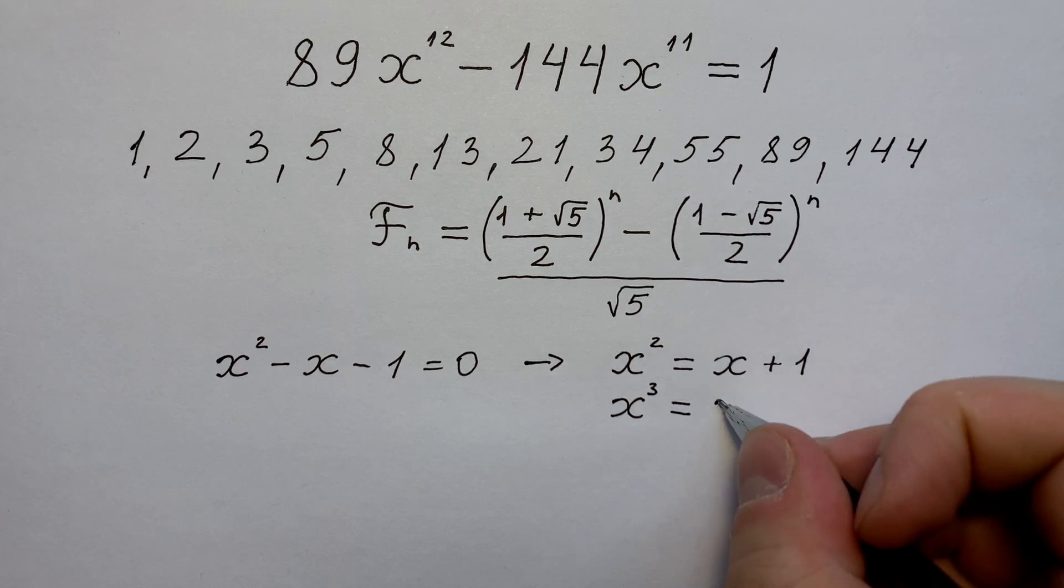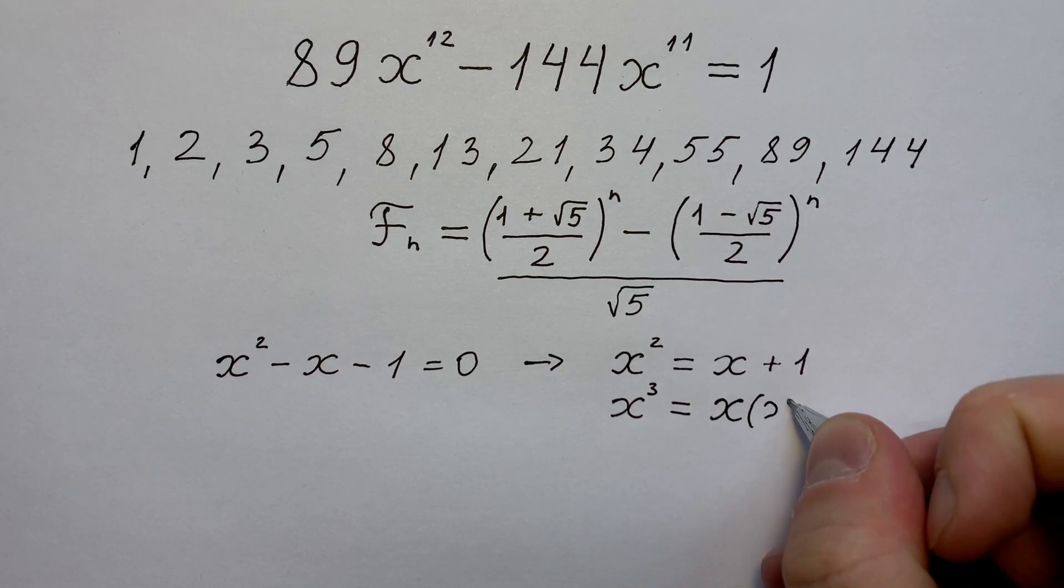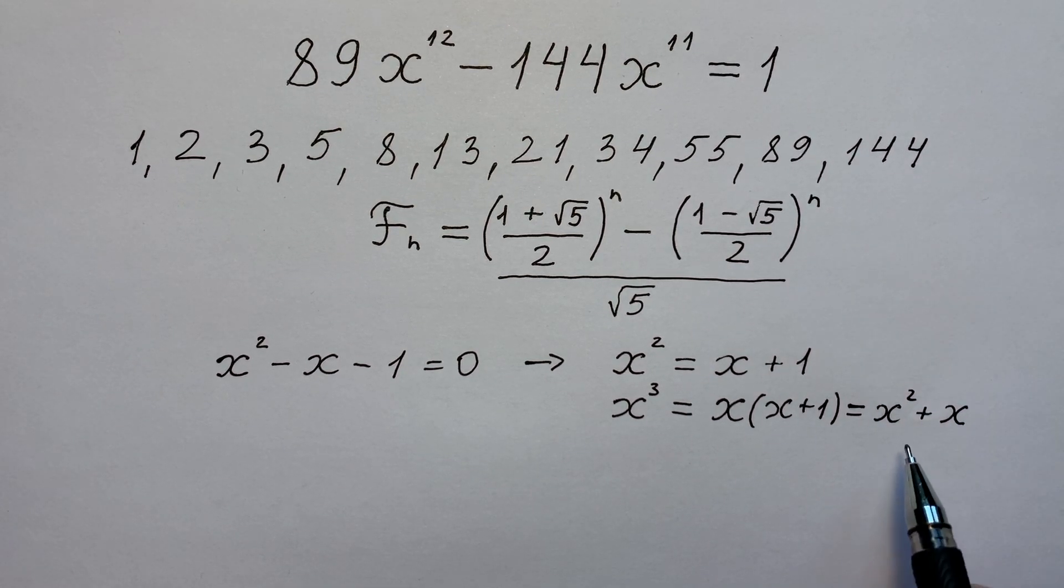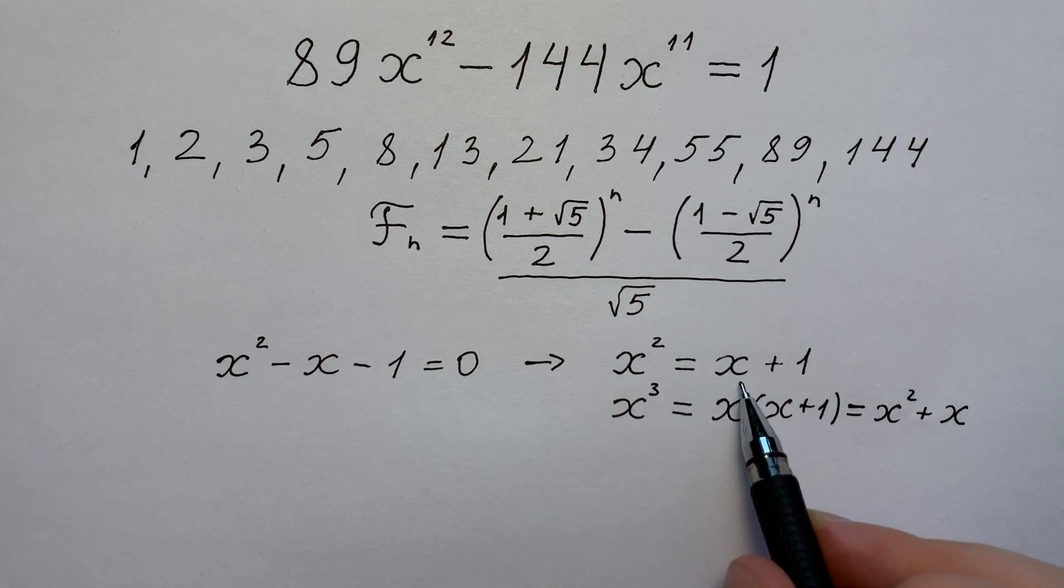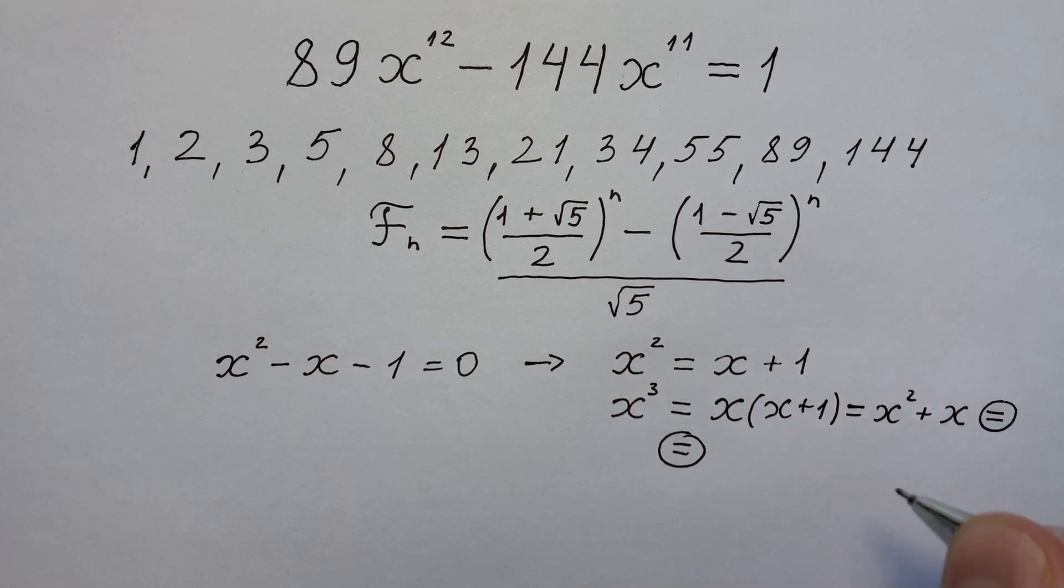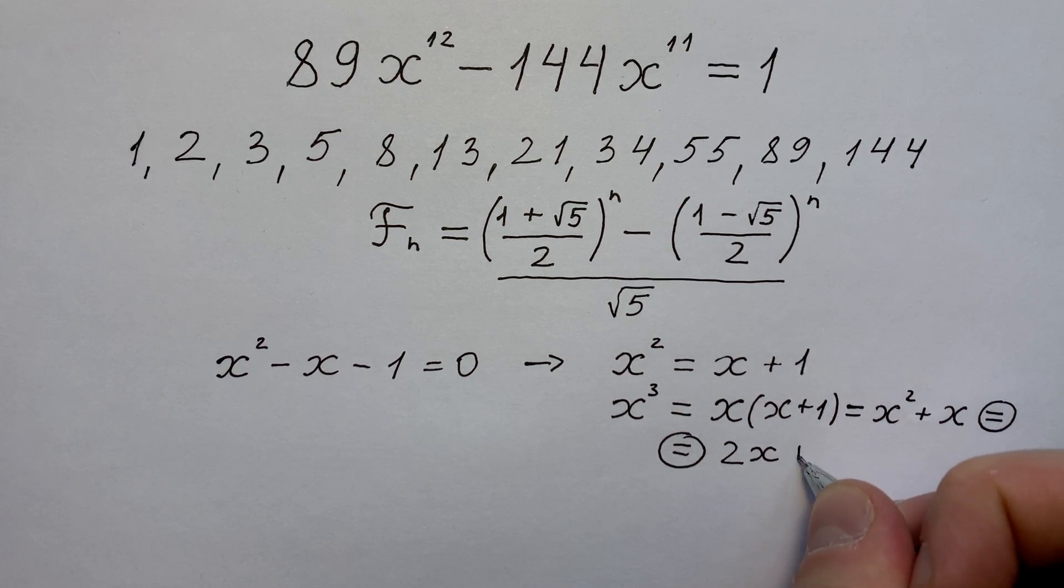Of course, it equals x times (x plus 1), or x squared plus x. But x squared equals x plus 1, so x to the power of 3 equals 2 times x plus 1.